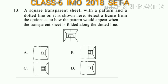Question number 13: A square transparent sheet with a pattern and a dotted line on it is shown. Select a figure from the options as to how the pattern would appear when the transparent sheet is folded along the dotted line. Looking at the figure, the correct answer will be option A.